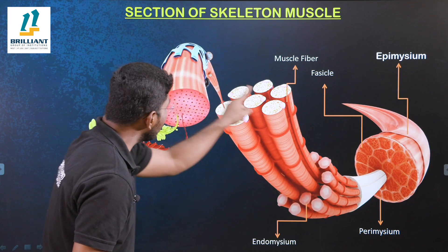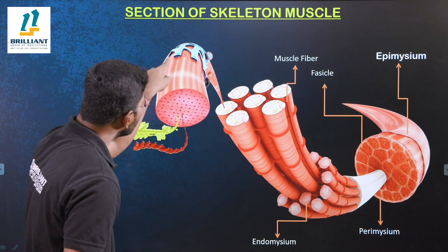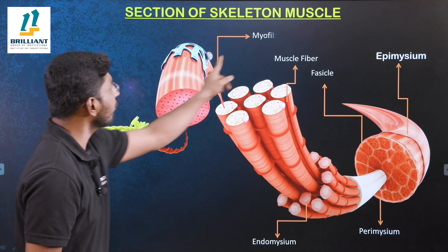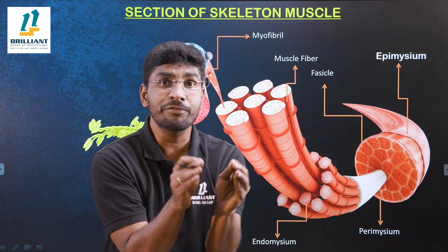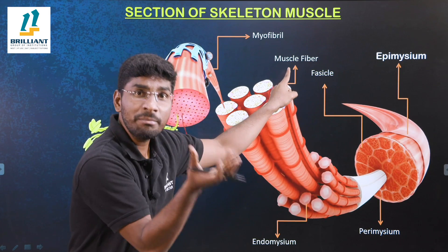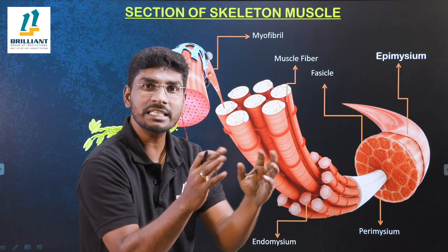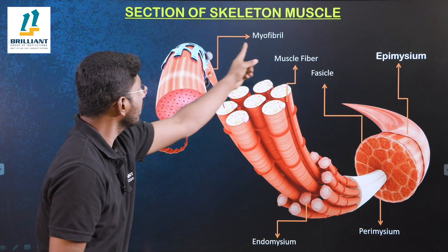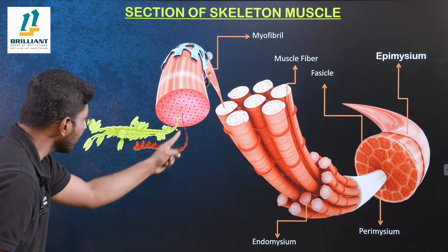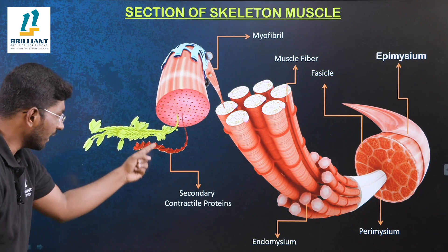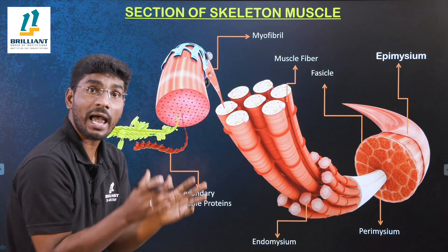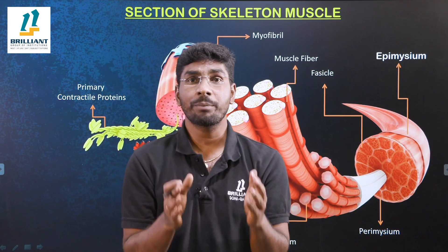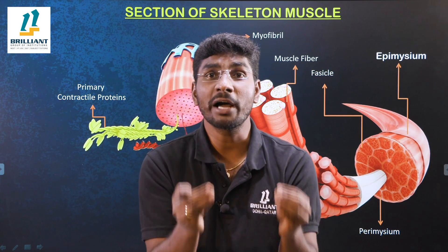Inside the muscle fiber there are many small myofibrils present. So the hierarchy is: many myofibrils fuse to form a muscle fiber, many muscle fibers fuse to form a fascicle, and many fascicles fuse to form the complete skeletal muscle. Inside the myofibril there are two types of contractile proteins — actin, the secondary contractile protein, and myosin, the primary contractile protein.